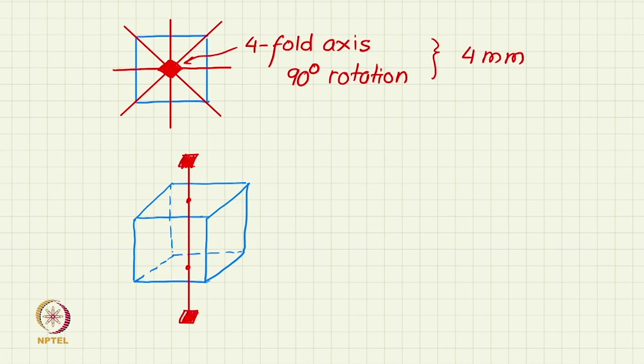That is, by 90 degree rotation, the cube will come into self-coincidence. It has other 4-fold axes. I leave that for you to work out.